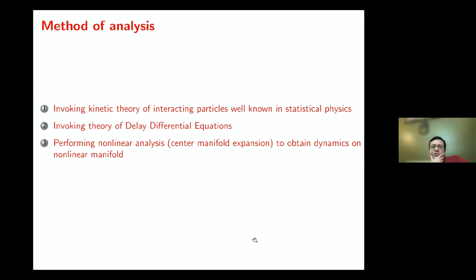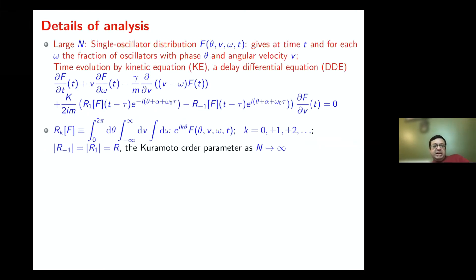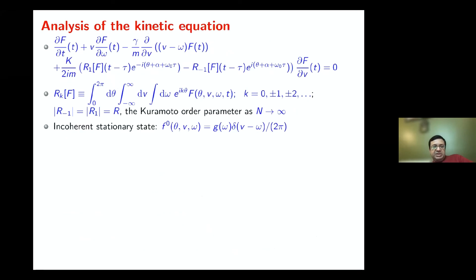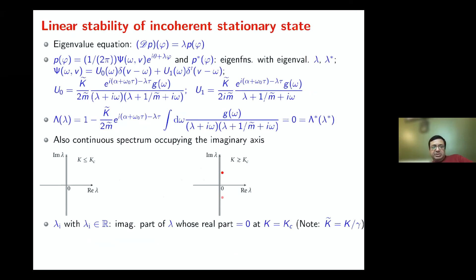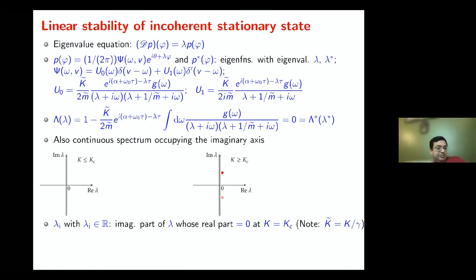Our exact results show that depending on the value of τ, you have alternating supercritical and subcritical bifurcations. To obtain these results, one needs to invoke kinetic theory, delay differential equations, and center manifold expansion — well known in non-linear dynamics. There is a parallel between our analysis and Landau damping theory in plasma physics. Everything can be done analytically and exactly.